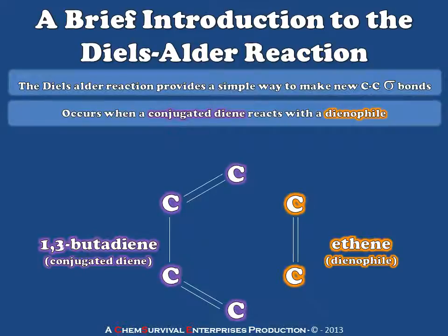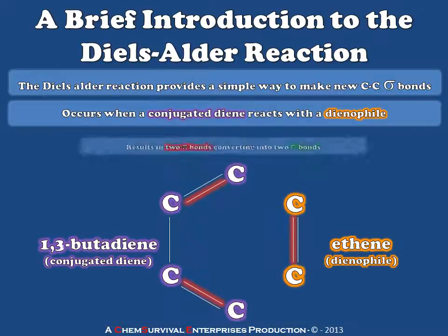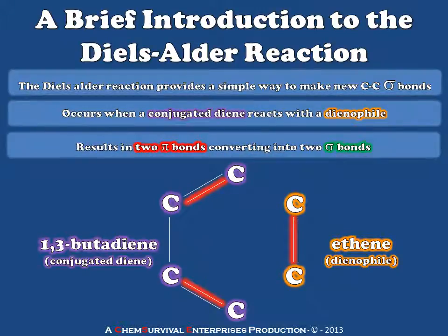What goes on during a 4 plus 2 pericyclic addition is that a single concerted step joins both of these molecules at two different places. We're going to take two pi bonds and turn them into two sigma bonds. I've highlighted the pi bonds in red, and those that convert into sigma bonds are going to turn green. The actual mechanism, believe it or not, is still debated today, but what we do know is it all happens at once.